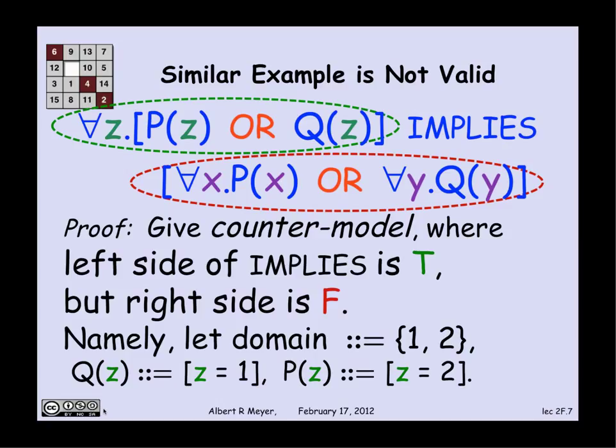Well, is the left-hand side true? Yeah. Because the only things there are in the domain are one and two. And so clearly, everything in the domain is either one or two. So the antecedent is true. On the other hand,